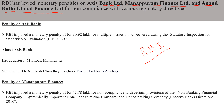First, the penalty on Axis Bank. The amount is 90.92 lakhs. RBI has imposed a penalty of 90.92 lakhs because they conducted a statutory inspection for supervisory evaluation on Axis Bank and found multiple irregularities during this inspection. So they put a fine of 90.92 lakhs on Axis Bank. The MD and CEO of Axis Bank is Amitabh Chaudhry, and the tagline is 'Badhti Ka Naam Zindagi'.